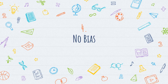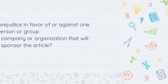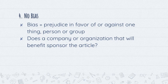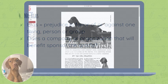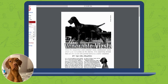The fourth characteristic we'll talk about is no bias. Bias means having prejudice in favor of or against one thing, person, or group. So we have to ask: does a company or organization that will benefit sponsor this article? Or does a person want to sway us to believe one side over another? In the article I've read through, it doesn't appear that this author has taken any kind of position. She's not trying to convince the reader of one thing or another — she is simply giving facts.